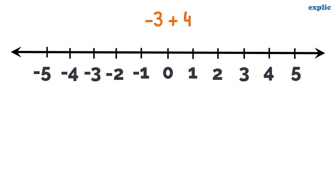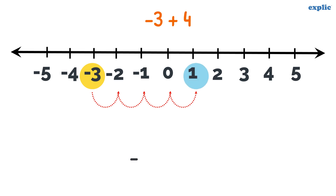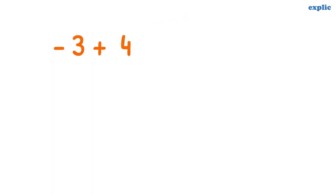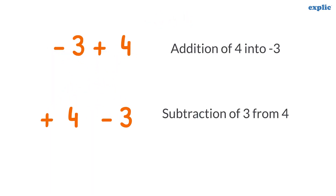To add 4 into minus 3, first locate minus 3 on the number line. Then move 4 steps or units in the right direction. The number we land on is the answer. You can also solve this by interchanging the position of minus 3 and plus 4.